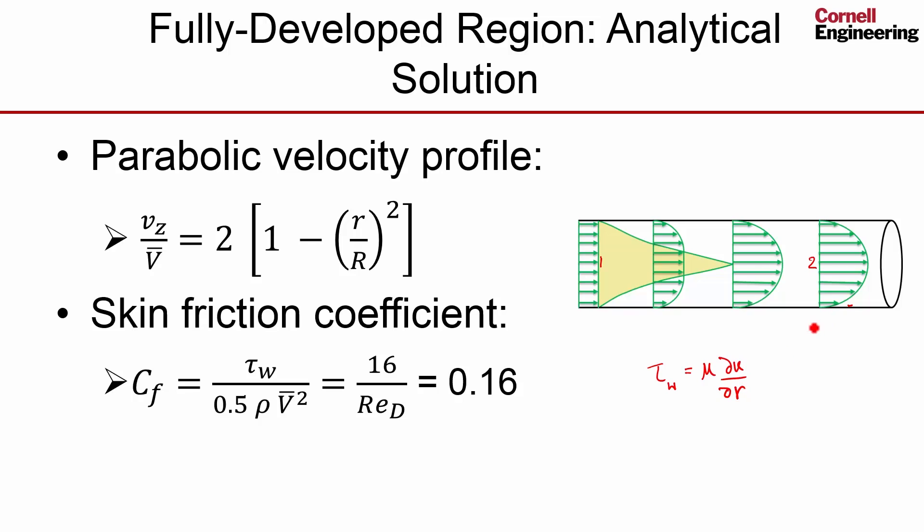to the normal gradient. This is v_z—the gradient of the axial velocity in the radial direction—and we need to evaluate this at the wall. From the velocity profile, we can differentiate, calculate that, and plug it back here. Then normalize it by half ρv², which is the dynamic pressure in the free stream.